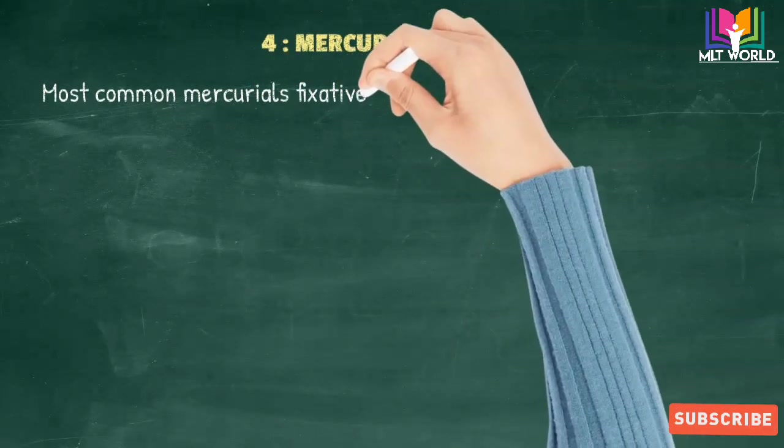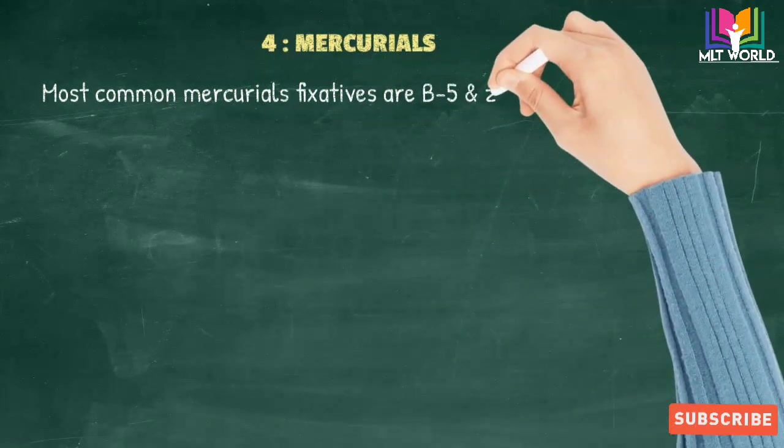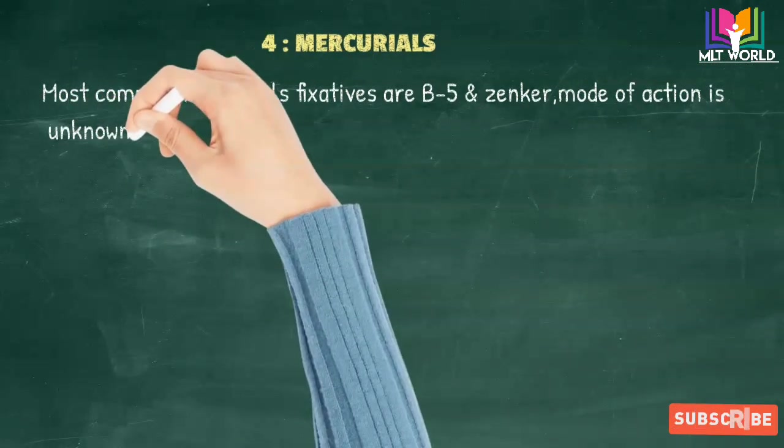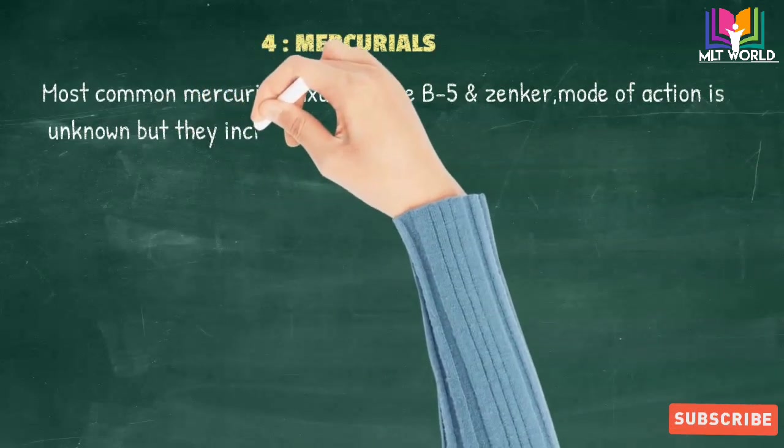Next group is mercurials. Most common mercurials used are B5 and Zenker's fixative. Mode of action is unknown, but they increase the staining brightness and give excellent nuclear details.